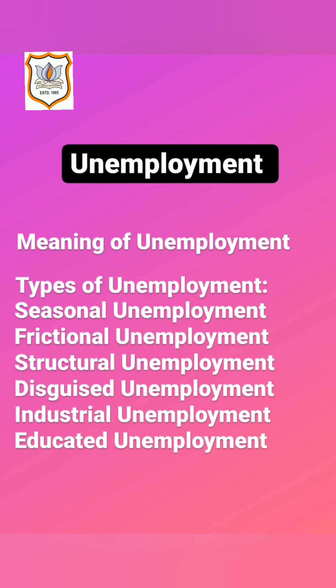The next type is disguised unemployment, also called hidden unemployment, which is found in agriculture wherein more than the required number of persons are deemed to have employment. However, they do not contribute to the total production of work.